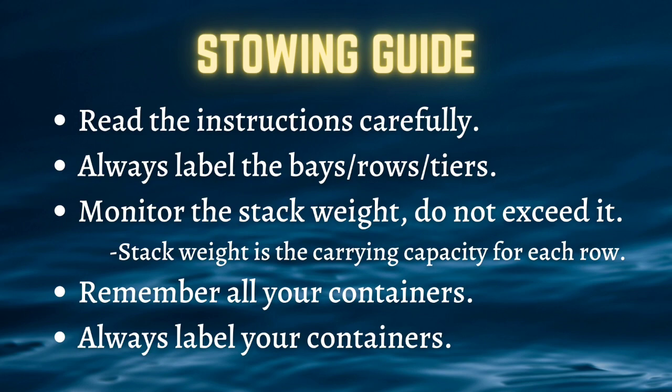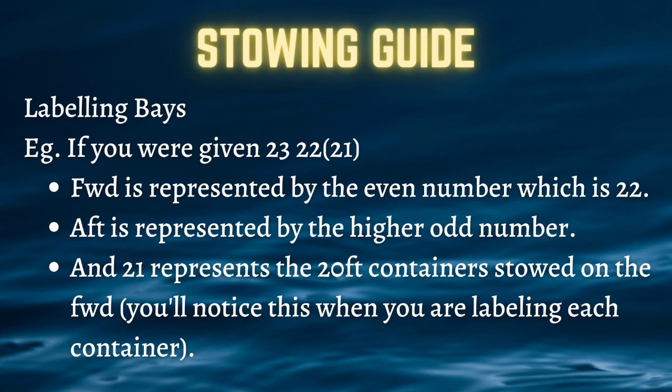When labeling the base, for example if you are given the numbers 23, 22, and 21: the forward is represented by the even number, which is 22; the aft is represented by the higher odd number, which is 23; and 21 represents the 20-foot containers stored on the forward.